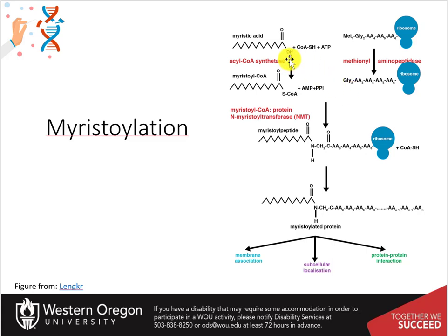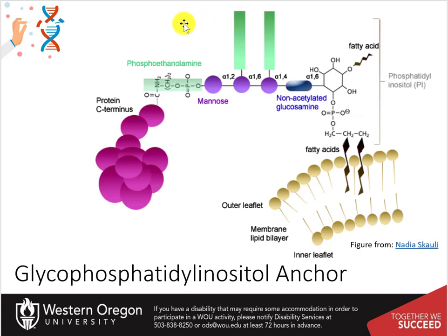Myristic acid is first converted to myristoyl-CoA, as a thioester provides a better leaving group during the formation of the amide linkage. During this process, a glycophosphatidyl inositol functional group is covalently linked with a protein as part of a post-translational modification to the C-terminal carboxylic acid through an amide linkage with the ethanolamine portion of the molecule. This is then used as a bridge to dock the protein covalently with the phosphatidyl inositol phospholipid bound in the plasma membrane, forming an anchor point for the protein.